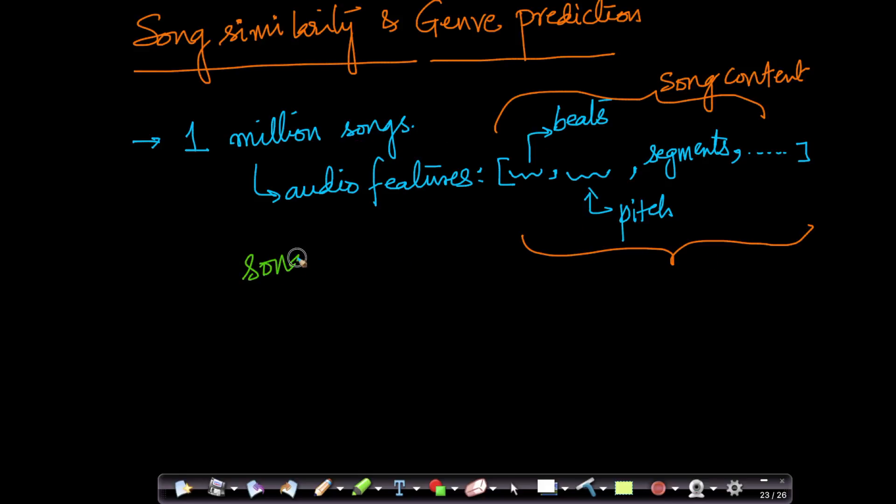So here what we're doing is we are taking a song and converting it into a mathematical vector. For those of you who are from computer science, we're converting it into a numerical array. Because at the end of the day, all of your machine learning algorithms work off numerical arrays. And how to do that is using something called feature extractors that we will learn as part of the course.